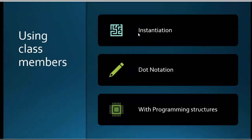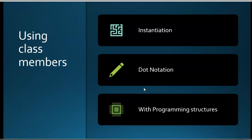Instantiation is when we take a class that we've already created and say we want it to be a variable — CB, like in the last example. Dot notation lets us call the data members, which are called properties, and also lets us call the methods with dot notation. So it would be the object name dot, and then a method like printLabel, which would be a method owned by that class.